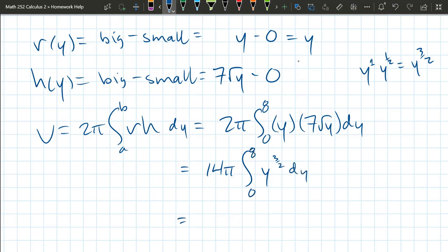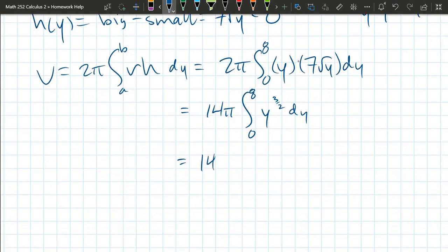And this is just anti-power rule. So it's y to the 5/2. You just add one to 3/2. You add 2/2 to 3/2 to get 5/2. Multiply by the reciprocal 2/5. And going zero to eight.